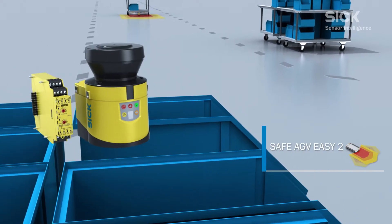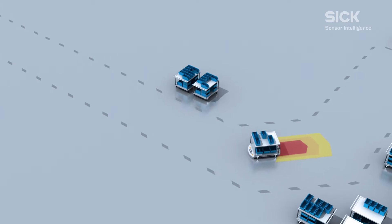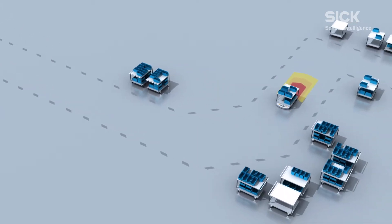For industrial trucks with one main direction of travel, S300 Professional and Flexi Classic, docking and quick cornering are possible thanks to the S300 Professional safety laser scanner's individual field switching.